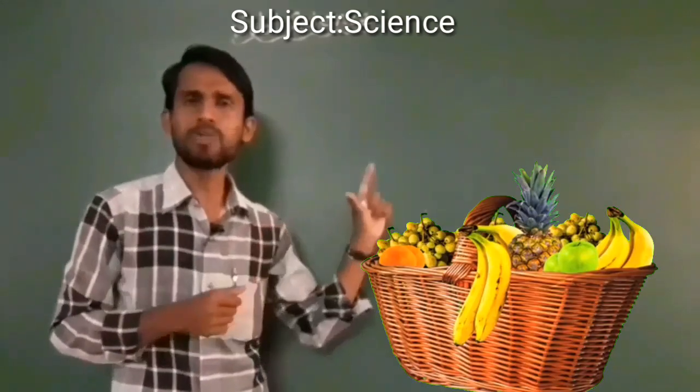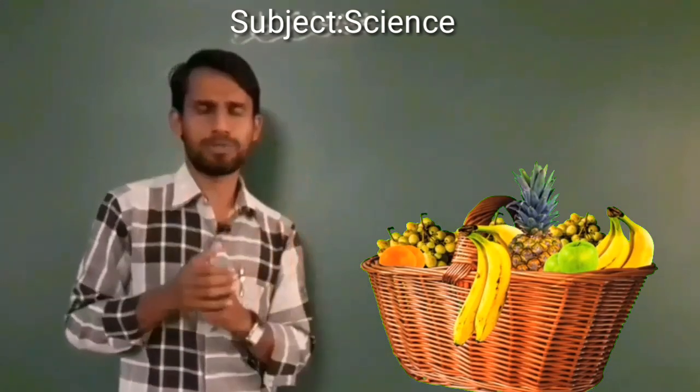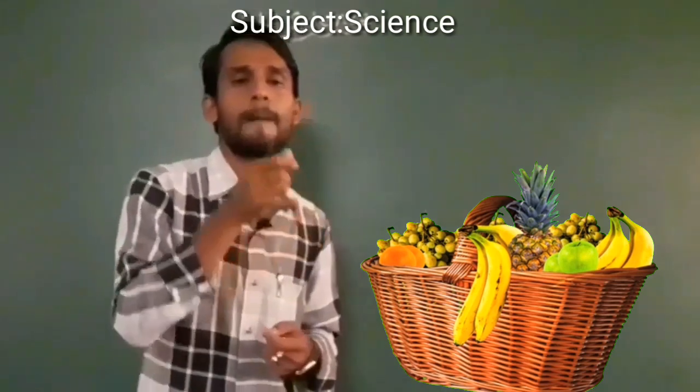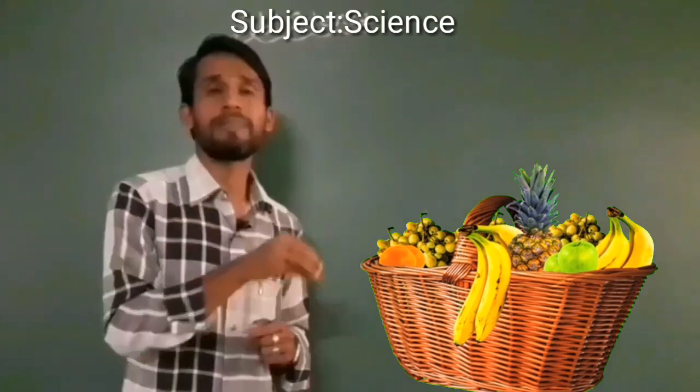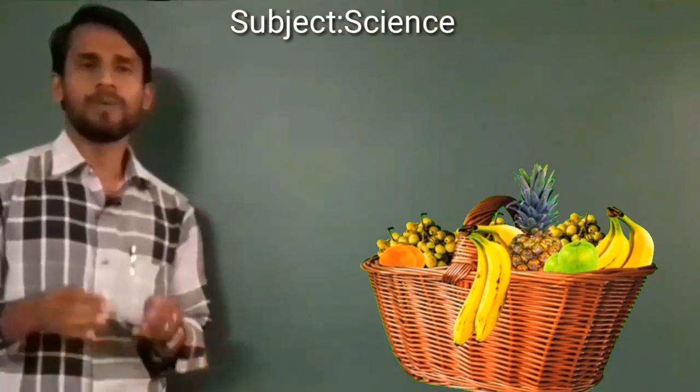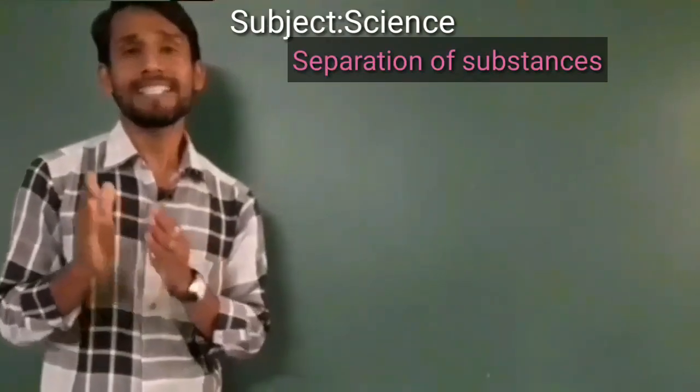Let's see another example. Observe this picture also. Here we have all kinds of fruits — banana, mango, grapes — a variety of fruits in this basket. But if you just want to eat mangoes, you will start picking the mangoes from the basket. This concept is called separation of substances from a mixture.